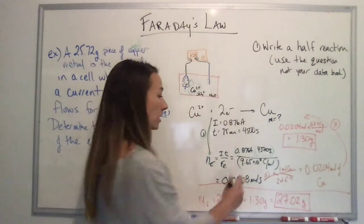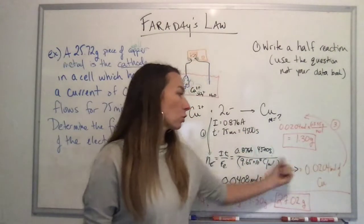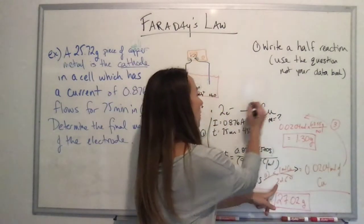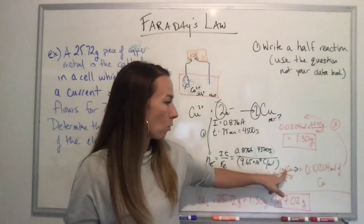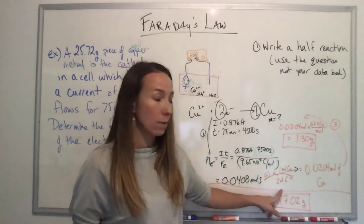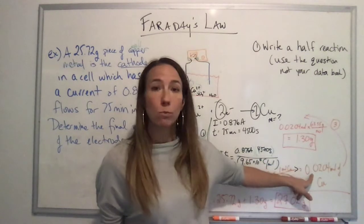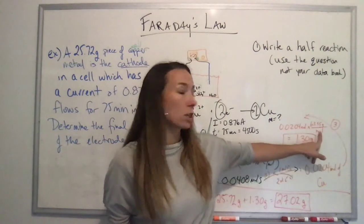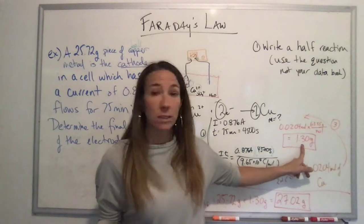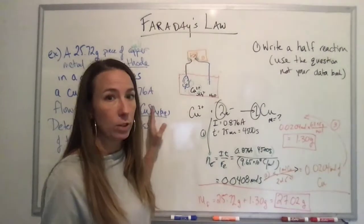So here's my amperage, 0.876 amps, and the time I've converted into seconds, 4500 seconds, divided by Faraday's constant, 9.65 times 10 to the power of 4 coulombs per mole. You can find that in your data booklet on page three so it's not something you need to memorize. Remember, the first thing I do in stoichiometry is I find my number of moles of electrons, and I'm going to have to use one of these formulas to do that. After I find that, my number of moles of electrons is 0.0408 moles.